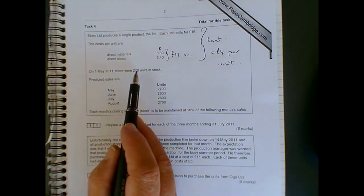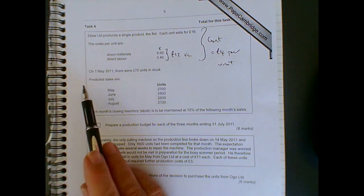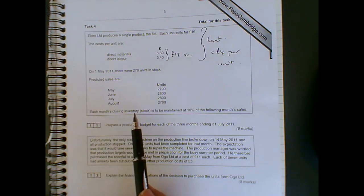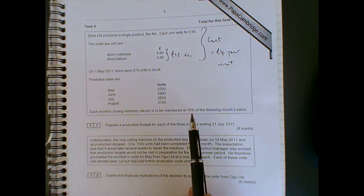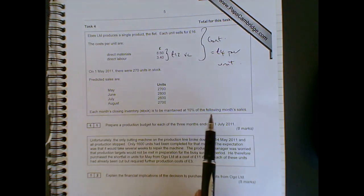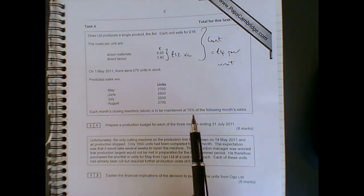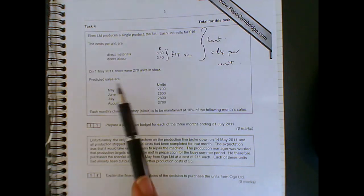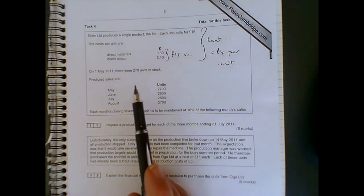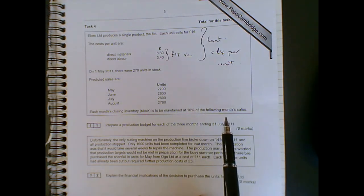1st of May 2011, 270 units in stock, so that's your opening inventory. Then we're given predicted sales for four months and told that each month's closing inventory is to be maintained at 10% of the following month's sales. The thing we need to remember is any maximum capacity for storage the business has got. In this question, they haven't told us about any constraints to the storage facilities, so we can just carry on with 10% of the following month's sales for our closing inventory.